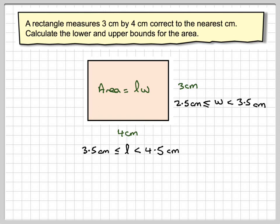Area is length times width. So for the lower bound, we take 3.5cm and multiply it by 2.5cm, which gives me, on my calculator, 8.75cm squared.